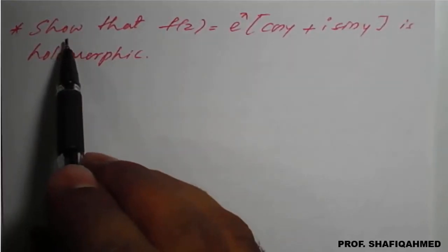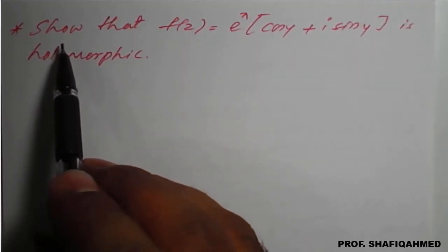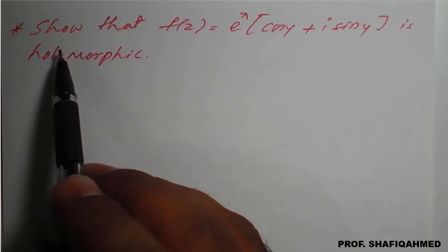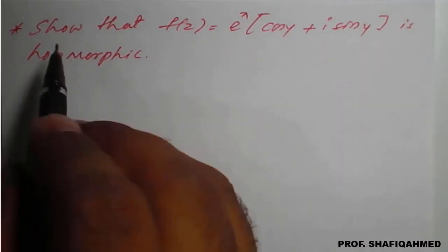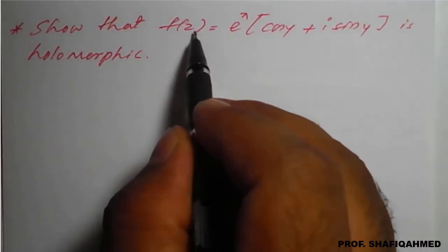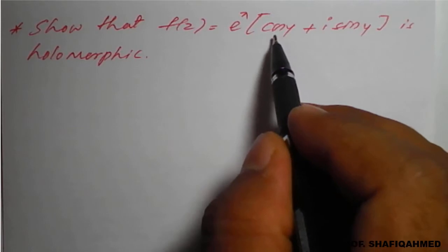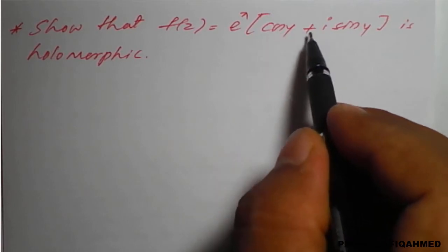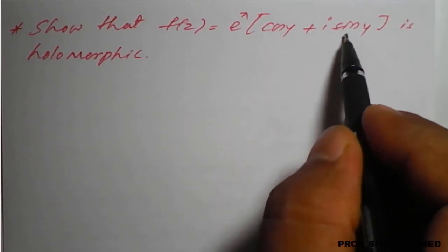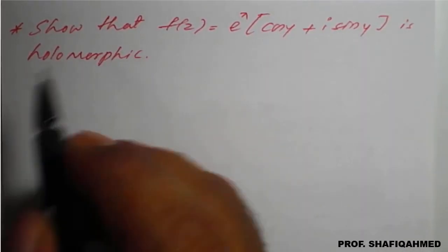Hello everyone. In this lecture we will see a problem based on analytic functions. The problem is: show that the function f(z) = e^x · (cos y + i·sin y) is holomorphic.